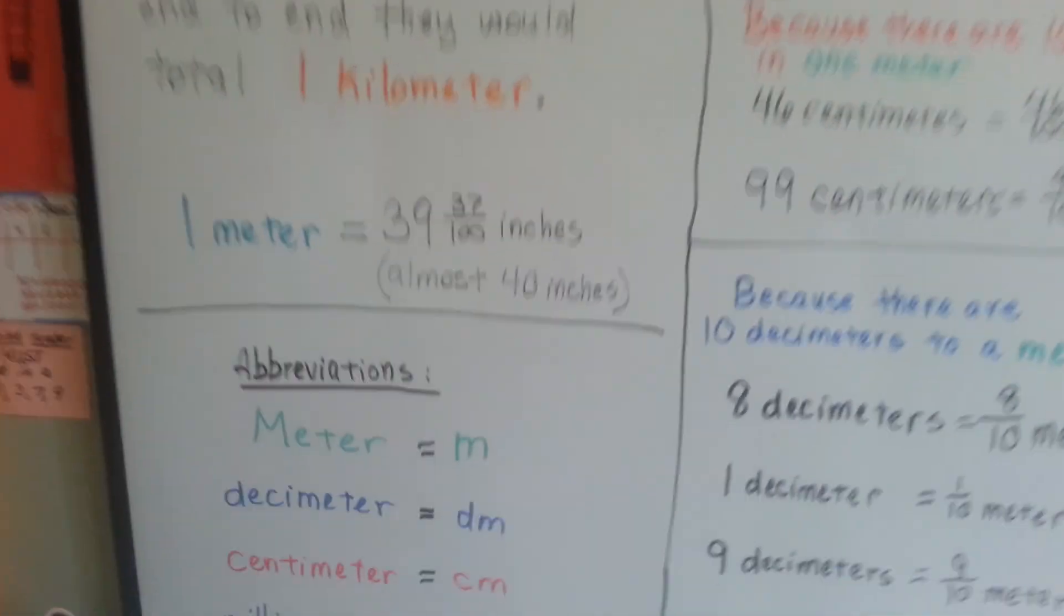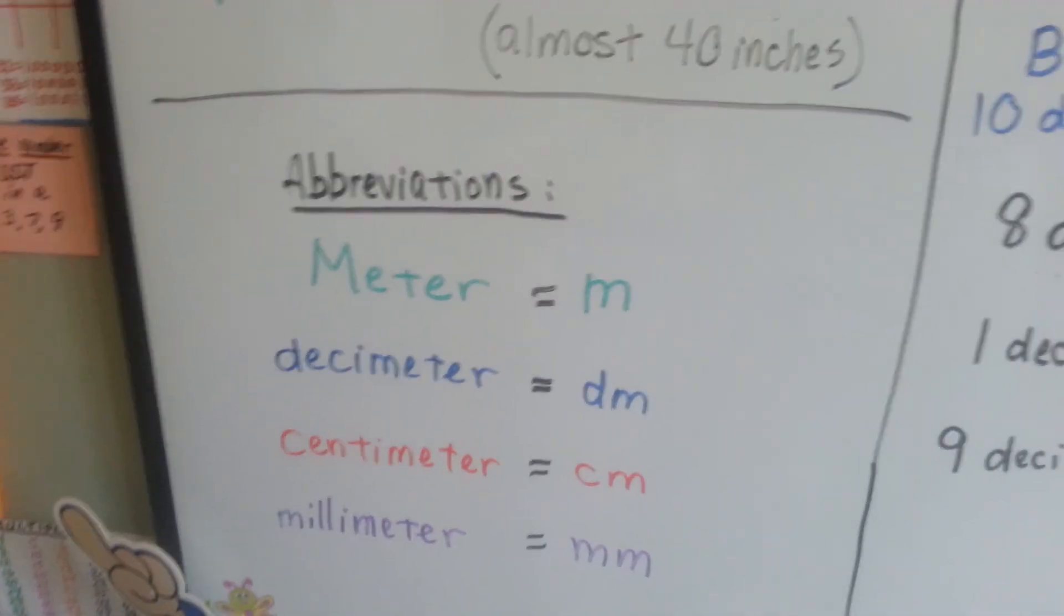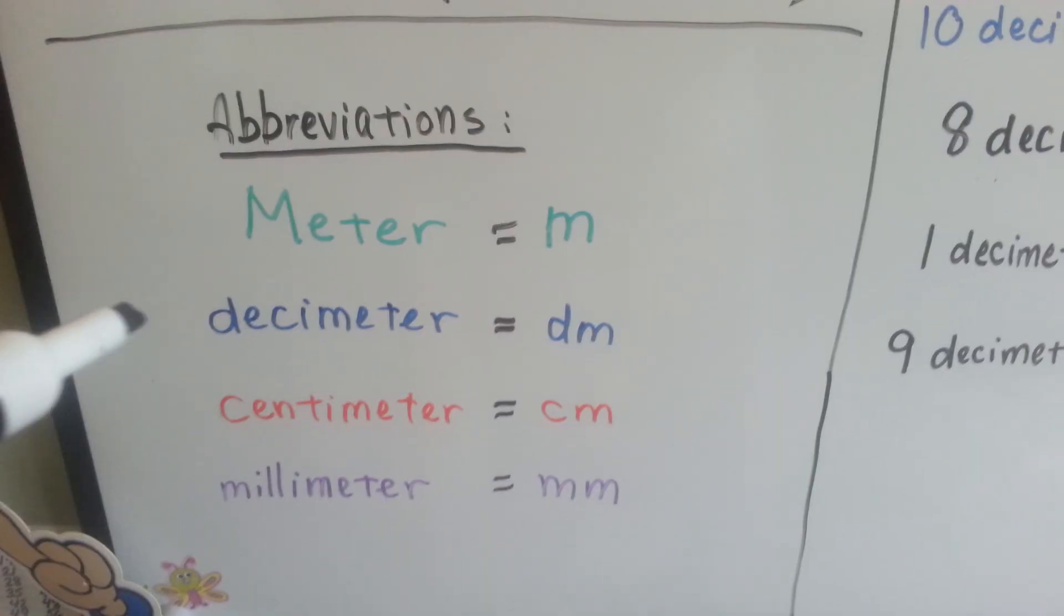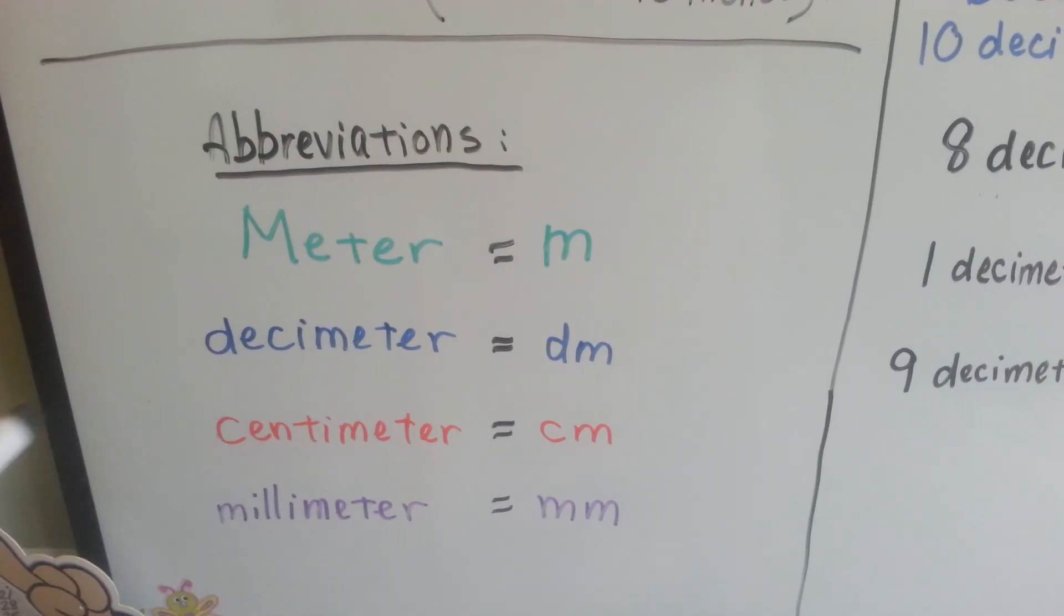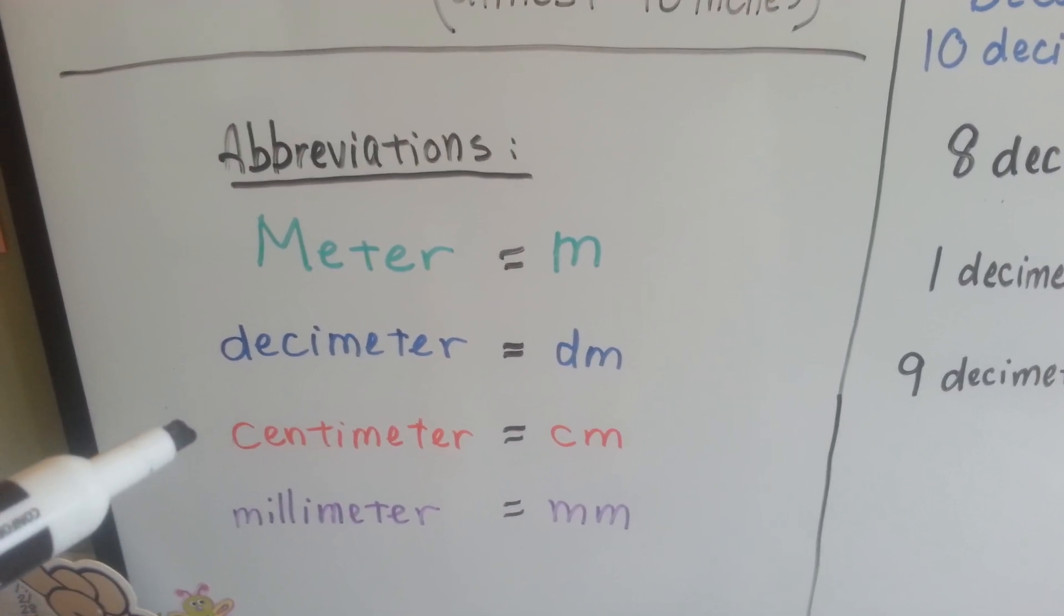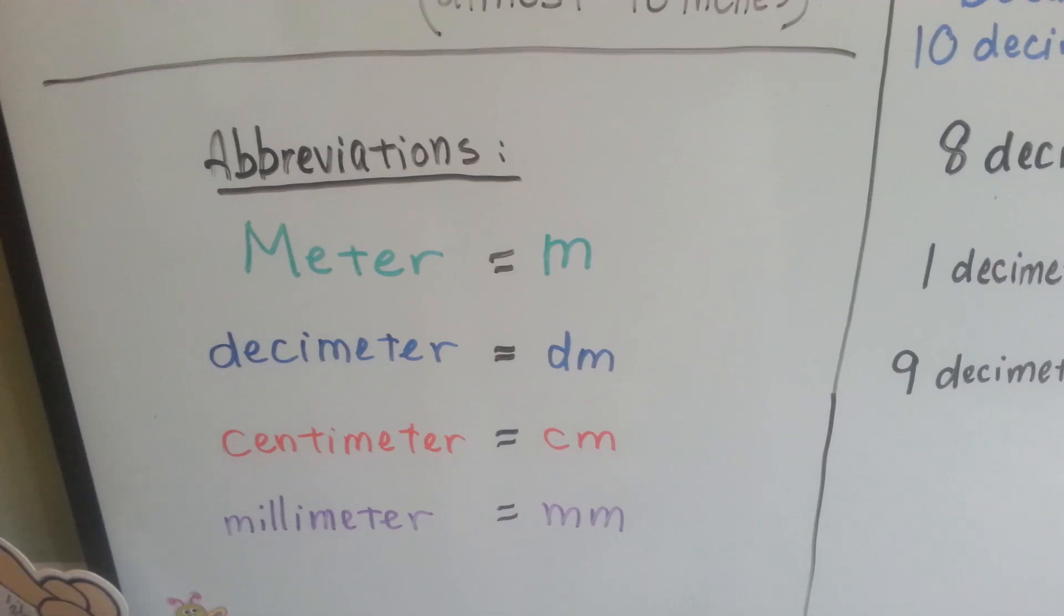We've got some abbreviations. The abbreviation for meter is just an M. For decimeter, it's DM. For centimeter, it's CM. And for millimeter, it's MM.